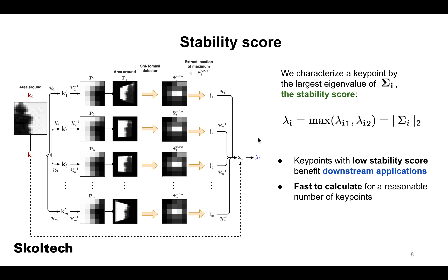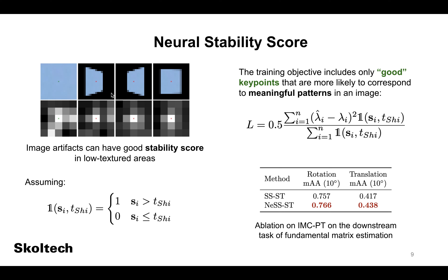The designed metric, the stability score, looks for keypoints that can be localized with extreme accuracy. To quantitatively assess this property, we employ the following procedure: given a keypoint, we take an image patch of a certain size around it and warp it by generated homographies. Then we consider a small neighborhood around the keypoint on a warped patch and run the Shi-Tomasi detector on it. This gives us the location of the extremum that we warp back to image coordinates. Accumulating warped locations, we calculate the sample covariance from which we extract the largest eigenvalue — that is, the stability score. Intuitively, the stability score assesses the maximum possible deviation of a keypoint from its initial location under viewpoint transformations. The stability score analyzes only shapes of responses without regarding their saliency or repeatability; hence, image artifacts in low-textured areas can have an ideal stability score.